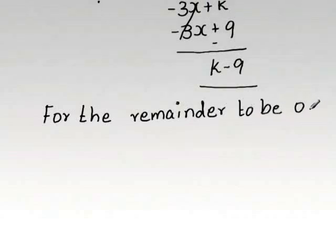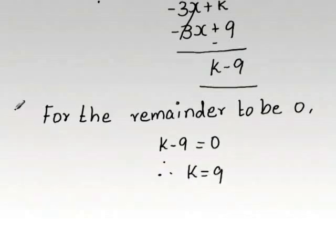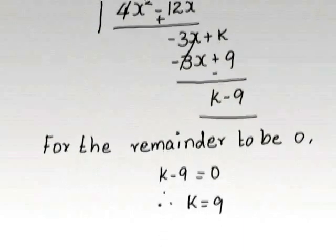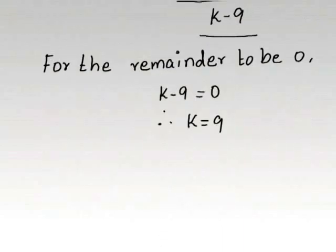Hence, k minus 9 can be equated to 0, which gives us k is equal to 9. Now, we found the value of k. Thank you.